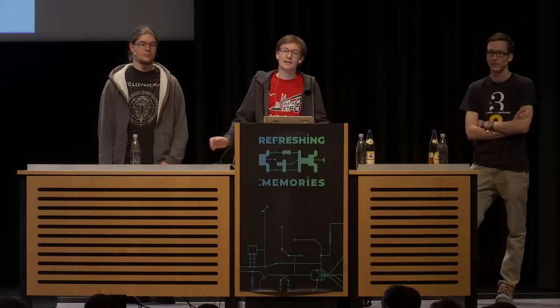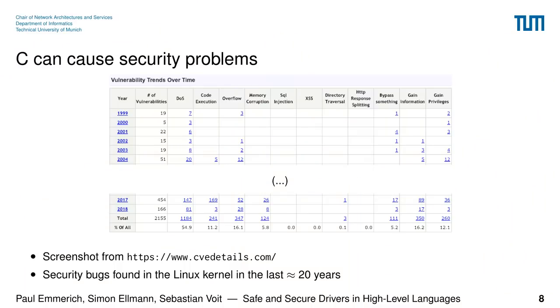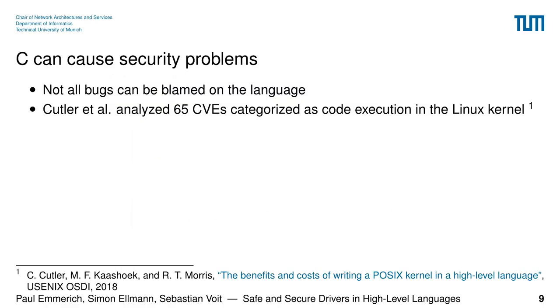The point is, C can be ugly — not only in terms of how it looks while programming, but also in terms of security. This is a screenshot from cvedetails.com showing security bugs in the Linux kernel over the last 20 years. You could say the language isn't to blame — you can write bad code in any language. But we need to check whether these bugs could have been prevented by using a memory-safe language.